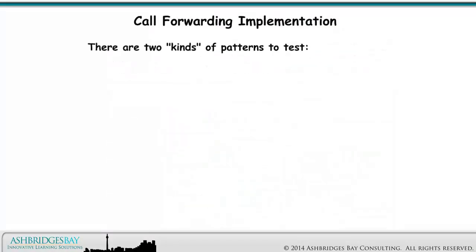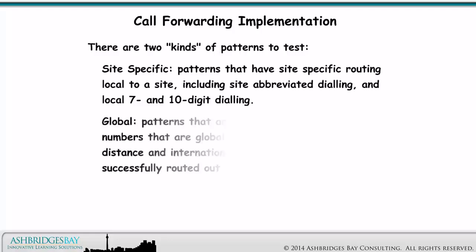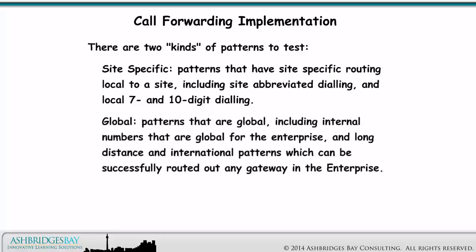There are two kinds of patterns to test. Site-specific patterns that have site-specific routing local to a site, including site abbreviated dialing, and local 7 and 10 digit dialing. And global patterns that are global, including internal numbers that are global for the enterprise, and long distance and international patterns, which can be successfully routed out any gateway in the enterprise. These two kinds of patterns have different behavior.